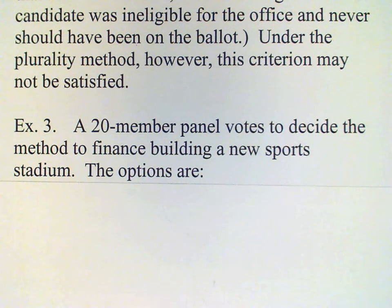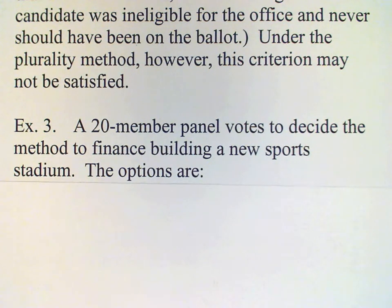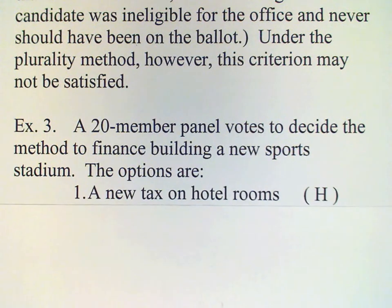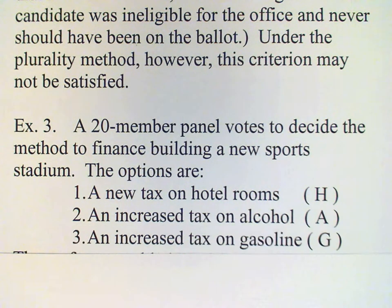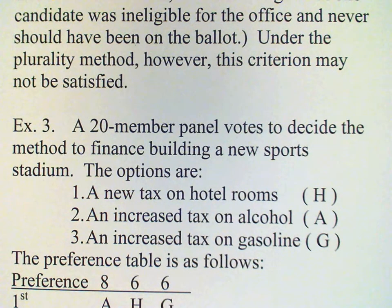We have a 20-member panel that will decide on a method to finance a new sports arena. The options are a new tax on hotel rooms, an increased tax on alcohol, and an increased tax on gasoline. The preference table is as follows.